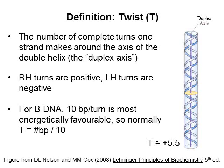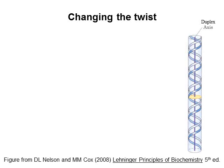For example, if we know that the twist of this section of B-DNA is 5.5, we can infer that that piece of DNA contains 55 base pairs — 10 base pairs per turn.